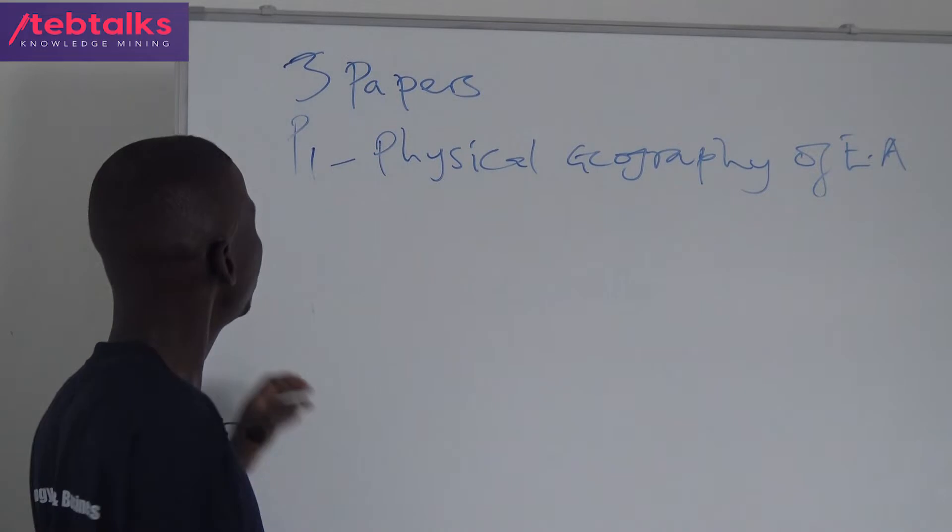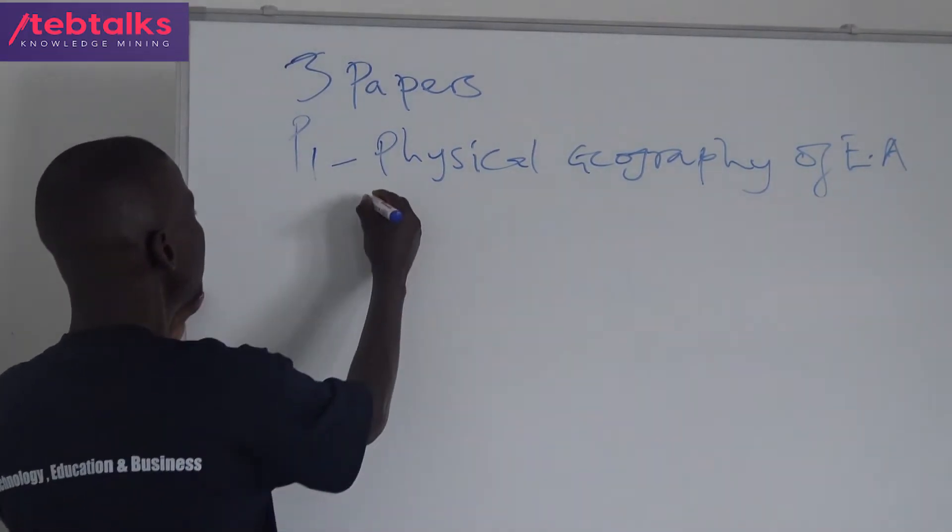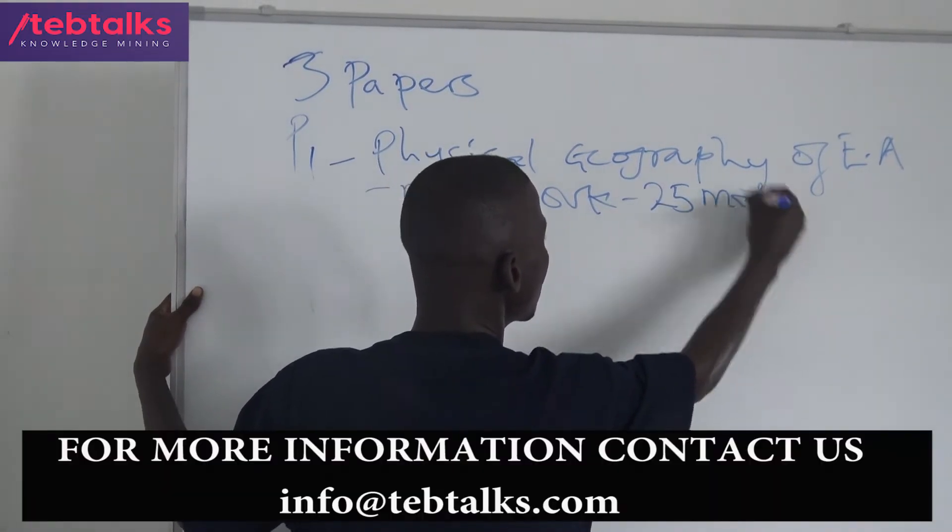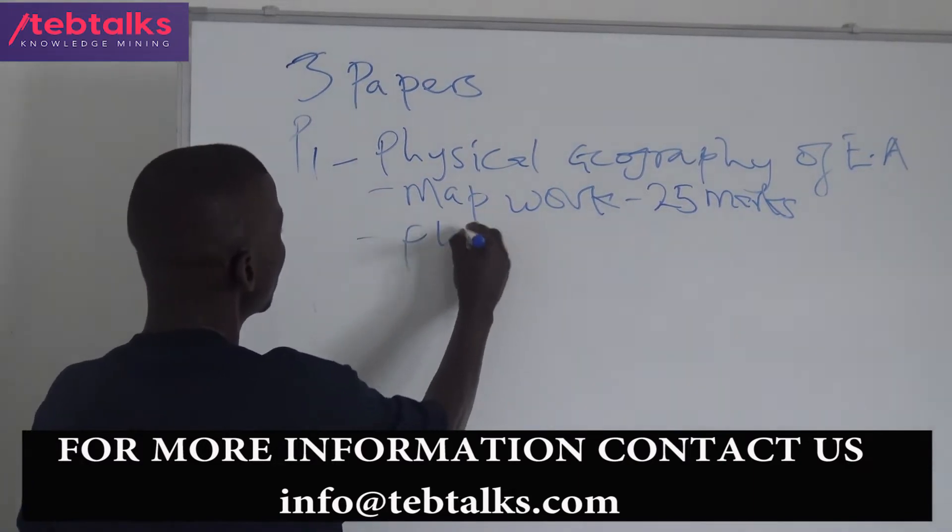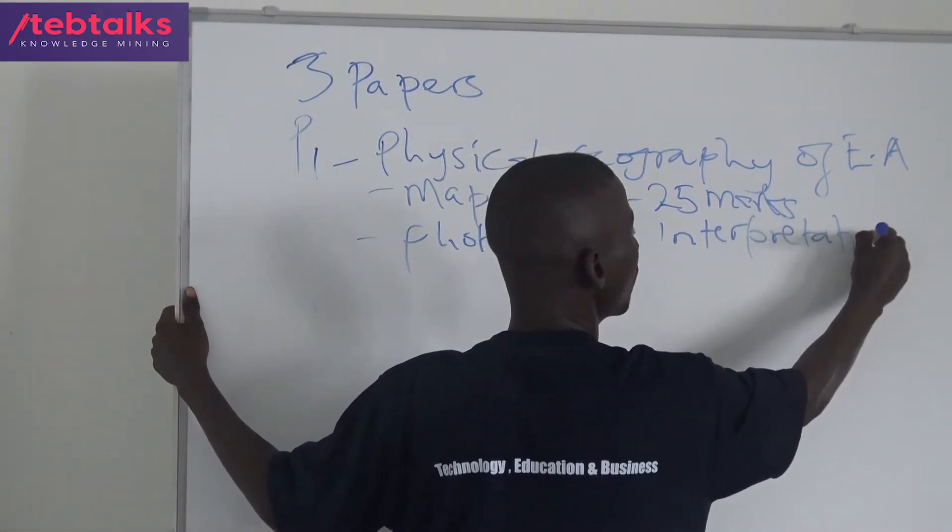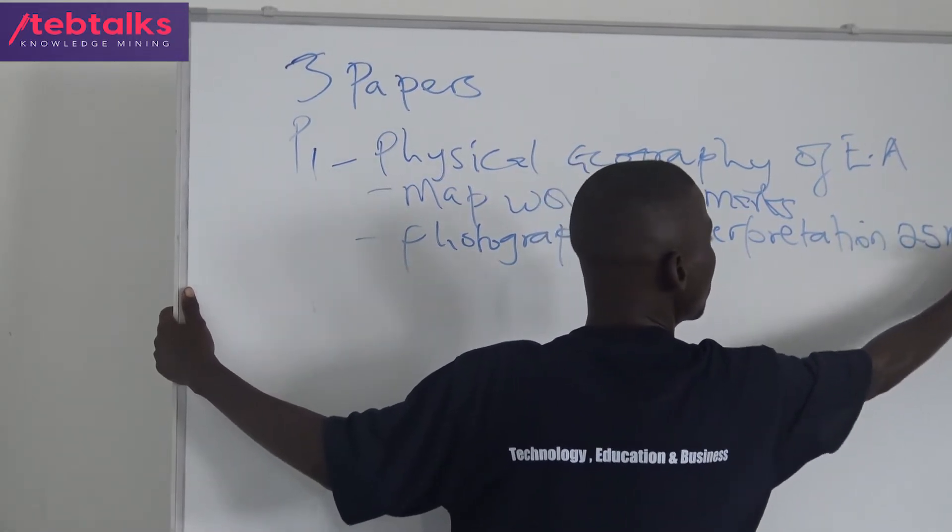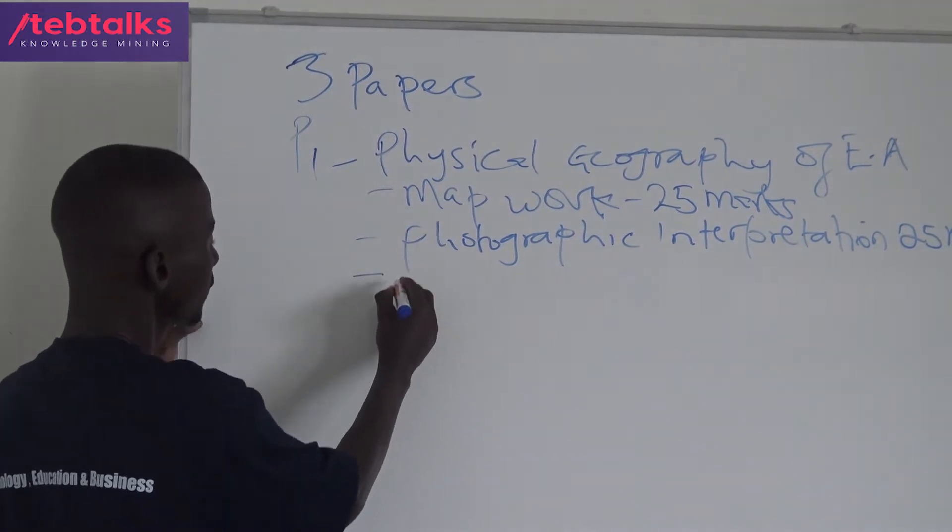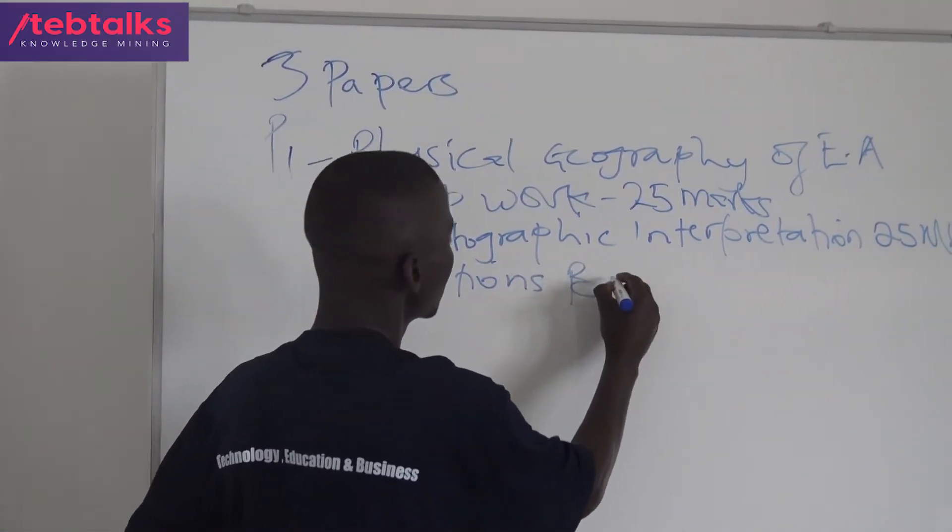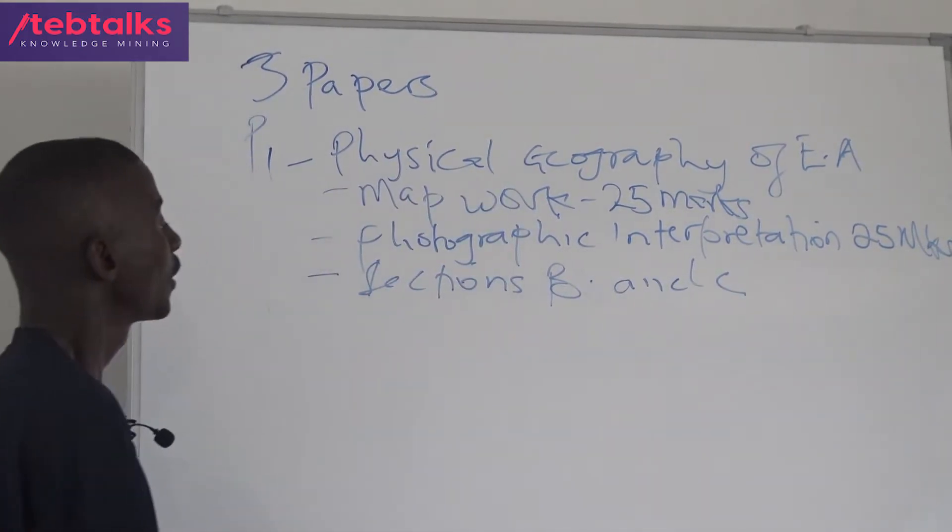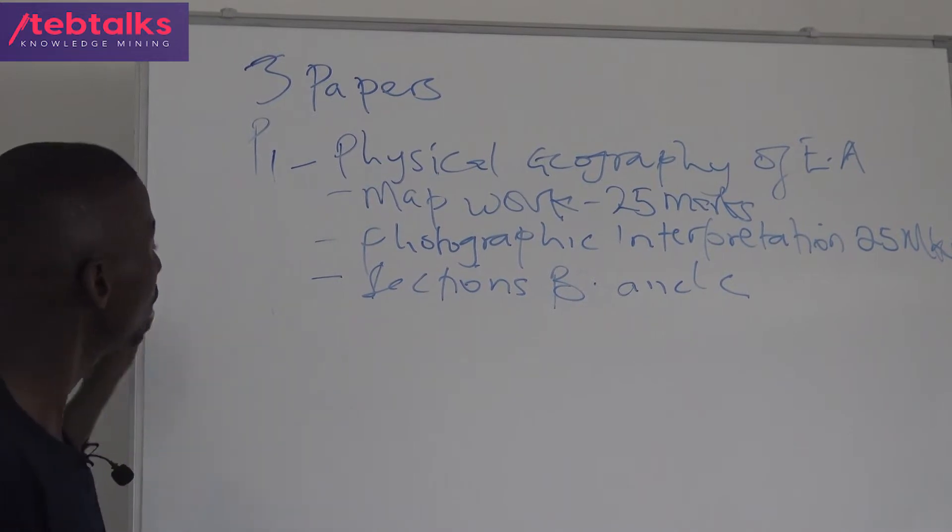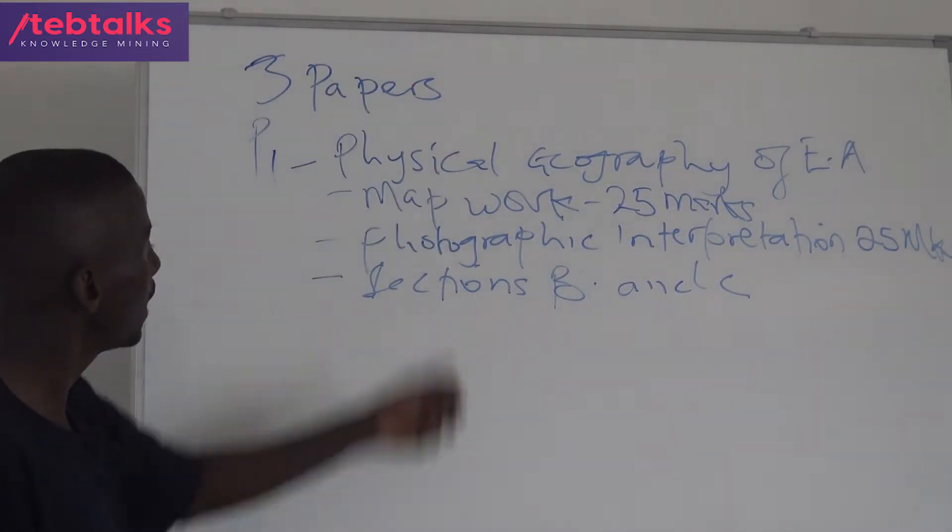The Physical Geography of East Africa has two compulsory numbers: Mapwork, taking 25 marks, and Photographic Interpretation, also carrying 25 marks. Then you choose one question from Section B and one from Section C, totaling 100%. The two first ones, Mapwork and Photographic Interpretation, are compulsory.